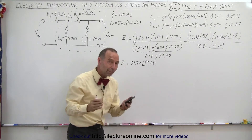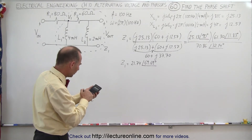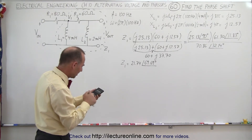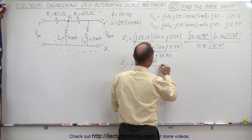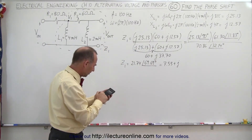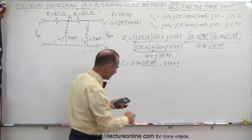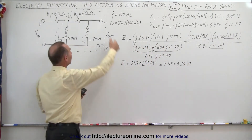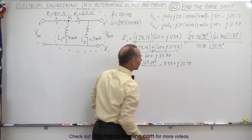We're now going to write this into real and imaginary part format so we can work with it in the future. So 21.74 times the cosine of 69.69 degrees equals 7.55 for the real part, plus J times 21.74 times the sine of 69.69 degrees, which is 20.39. So now we have the impedance of this part of the circuit both in magnitude-angle form and in rectangular form.